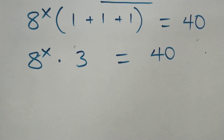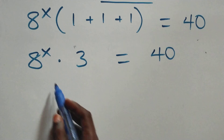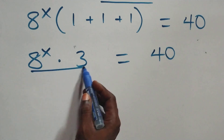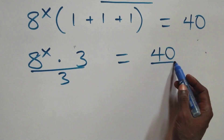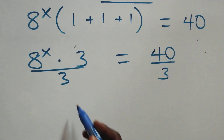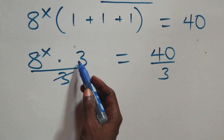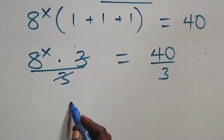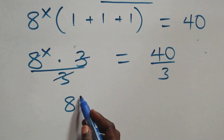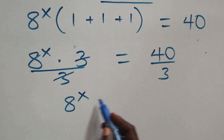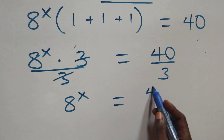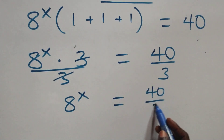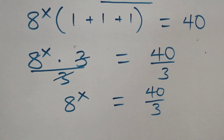The next step here: we divide both sides by 3 — divide this side by 3, also divide this side by 3 — which implies 3 cancels each other, and we have 8 raised to the power x equals to 40 over 3.